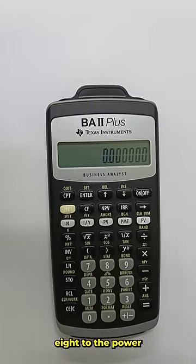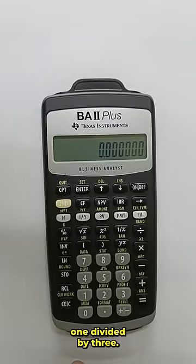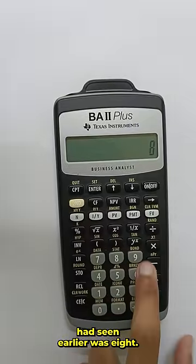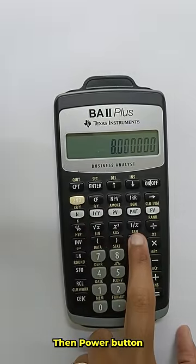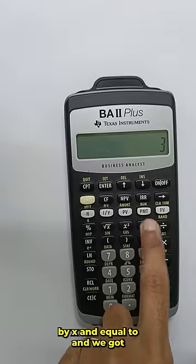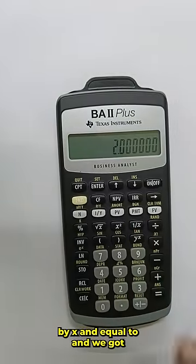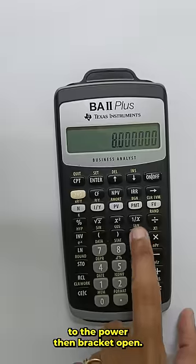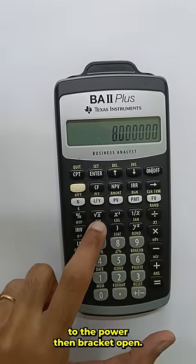Suppose you want to calculate 8 to the power of 1 divided by 3. One way we had seen earlier is to press 8, then the power button, then 3, then use the reciprocal 1 by x button and equal to, and we got the answer. Another way is to press 8, then power, then open bracket.